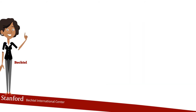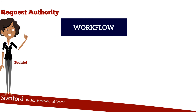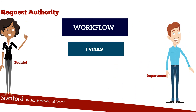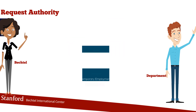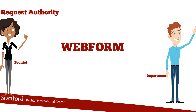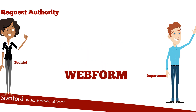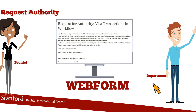You will then be asked to request authority for the online workflows. We have two workflows: one for J visas and one for temporary employment visas, such as the H, O and E3 visa. To obtain authority to access these workflows, you will need to submit a web form. We'll send you the link for this web form if you email us.